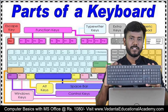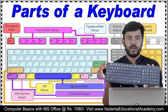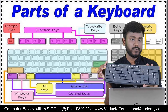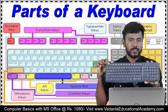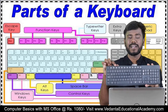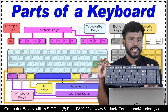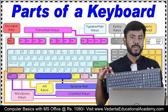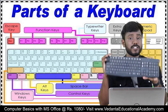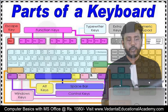On every keyboard, at the top left you can see the ESC key, which is used to go back or exit. Next to the escape key, we have F1 through F12 function keys. For example, F1 is the function key for help, and F2 is the function key for rename — each function key has its own specific function.